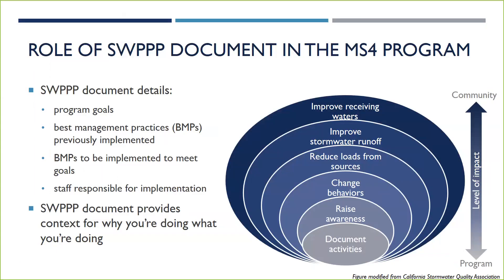A crucial component of a self-audit in your stormwater management program is your SWIFT document. The SWIFT document is the foundation of your stormwater management program, and you will rely on it heavily during the self-audit. Also called Part 2 of the application for permit coverage, it details for each MCM your program goals, best management practices or BMPs already implemented and those that will be implemented, and the staff or positions responsible for BMP implementation. The SWIFT document is a fluid, living document you can update at any time, and it best relates the BMPs and activities you are undertaking to how they meet the goals of your stormwater management program.